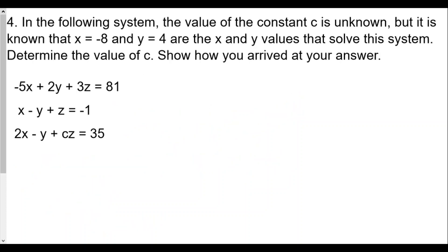Question four: in the following system, the value of the constant c is unknown, but it is known that x equals negative 8 and y equals 4 are the x and y values that solve the system. Determine the value of c and show how you arrived at your answer. Since x equals negative 8 and y equals 4 are solutions for all three equations, we can plug them into either the first or second equation to find z. I'll use the second one since it's more straightforward.